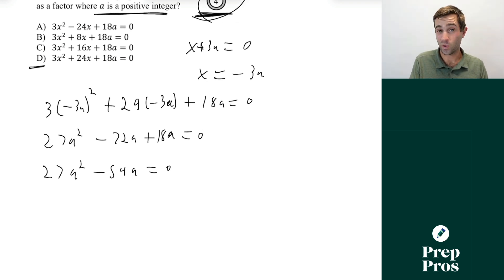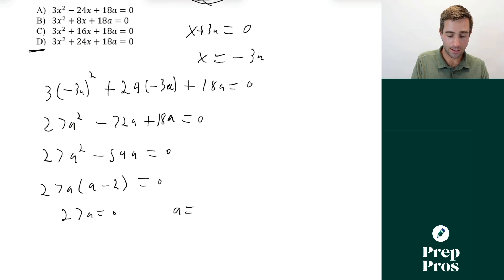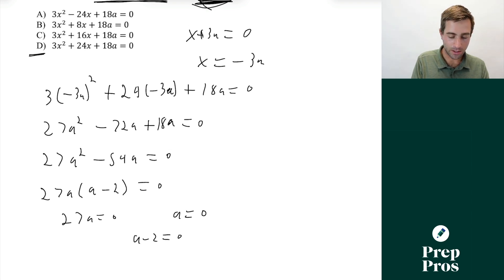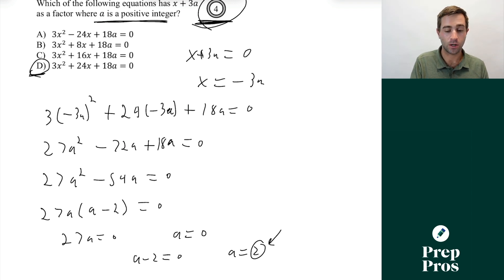Well, we can now start to factor this down and simplify. You can take a 27a out of each of these terms. So we can do 27a(a - 2) = 0. That will give us solutions of 27a = 0. So that will give us that a = 0. That's not a positive integer. But when we have a - 2 = 0, well, that will give us that a = 2. There's our positive integer. That's how we can see that d is our correct answer. No other answer choice when we go through similar steps is going to give us a positive integer. That's what you're looking for when you see a question like this on test day.